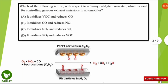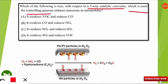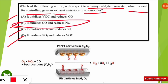The next question asks: which of the following is true with respect to a three-way catalytic converter, which is used for controlling gaseous exhaust emissions in automobiles? The correct option is option B. The three-way catalytic converter oxidizes carbon monoxide and reduces NOx gas.